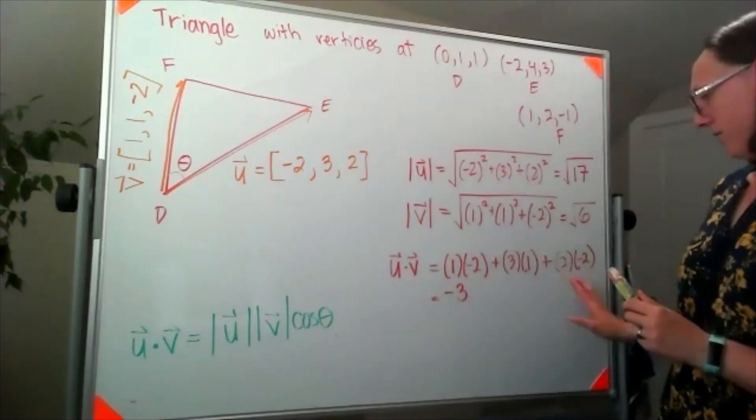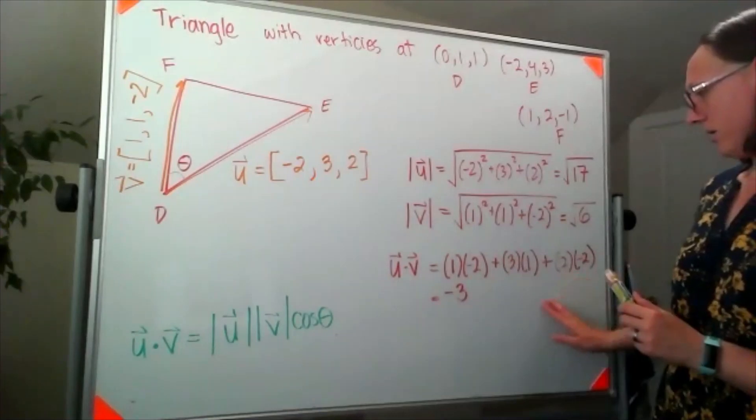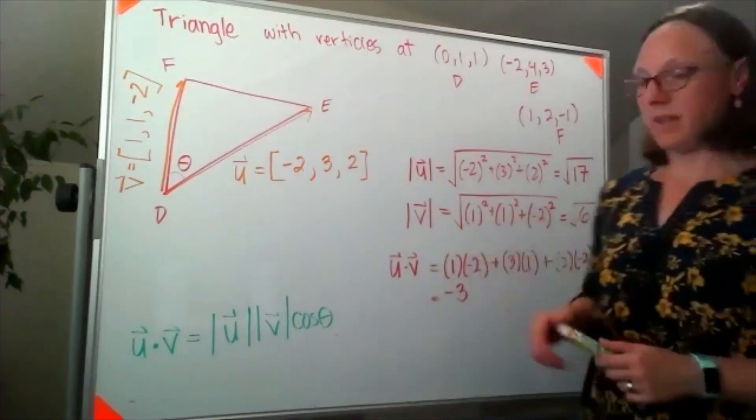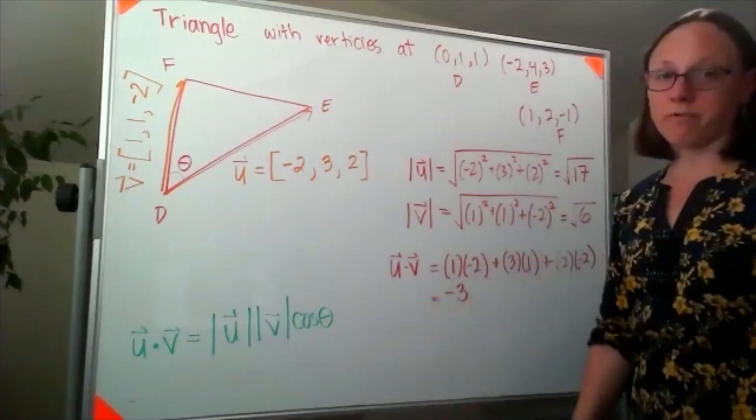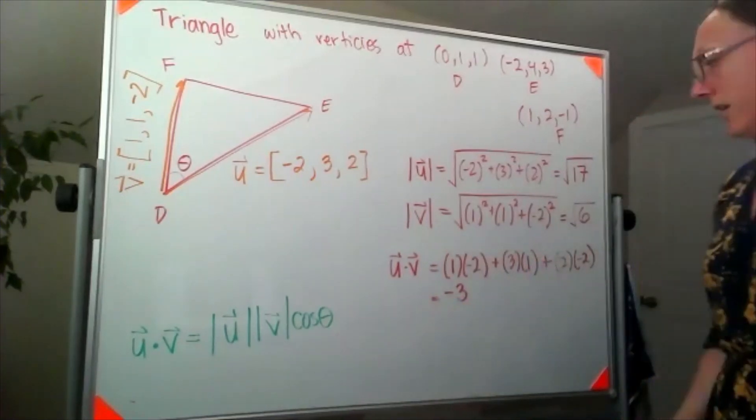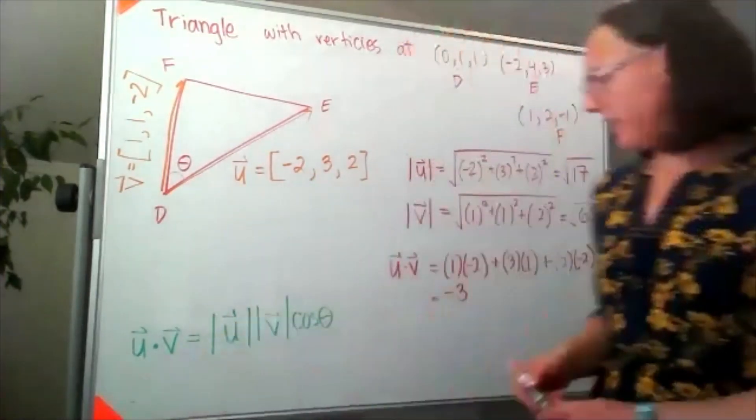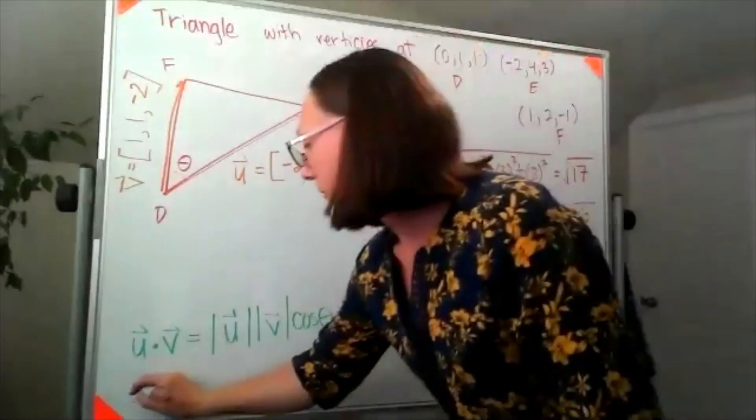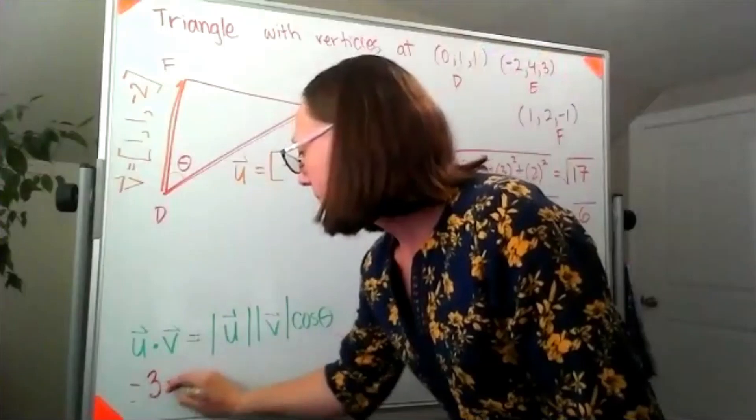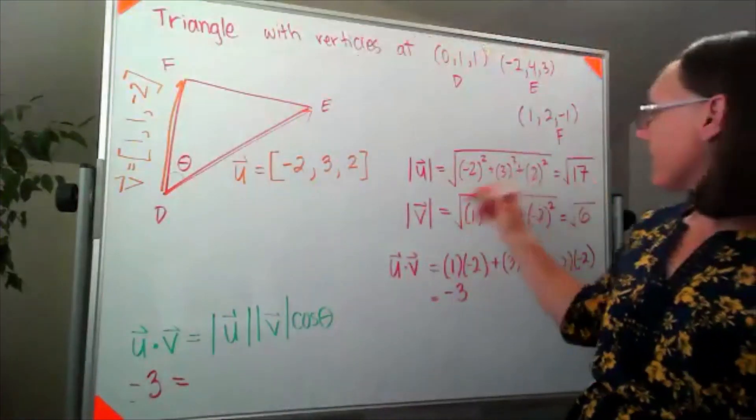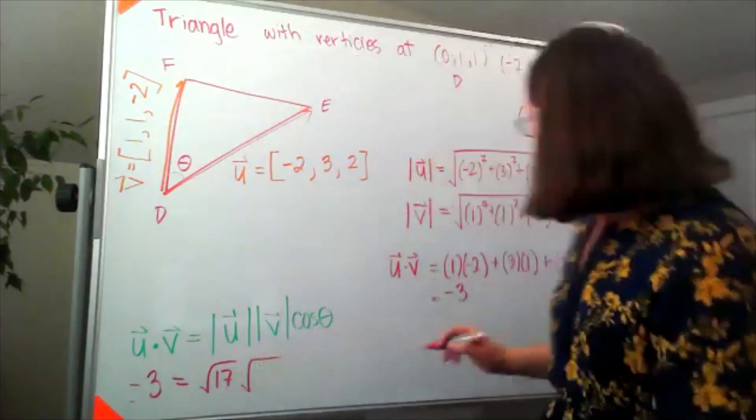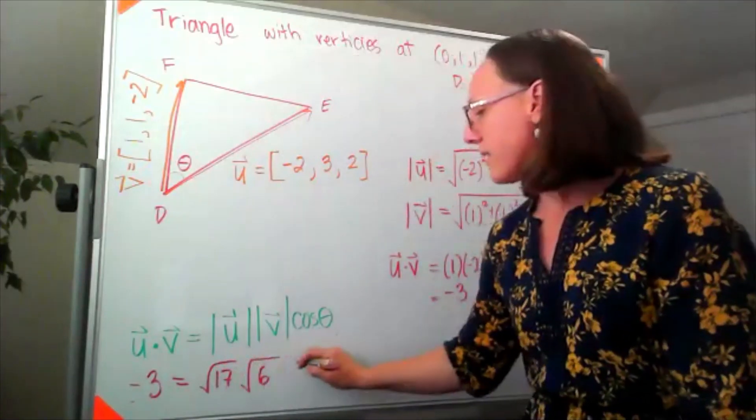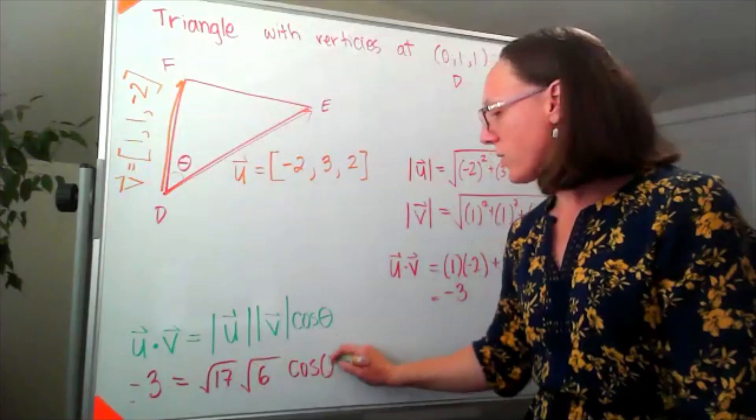Now I'm ready to plug that into our formula. So on the u dotted with v side, I'm going to put my negative three. And then I'm going to have a square root of 17 times a square root of six times cosine of theta.